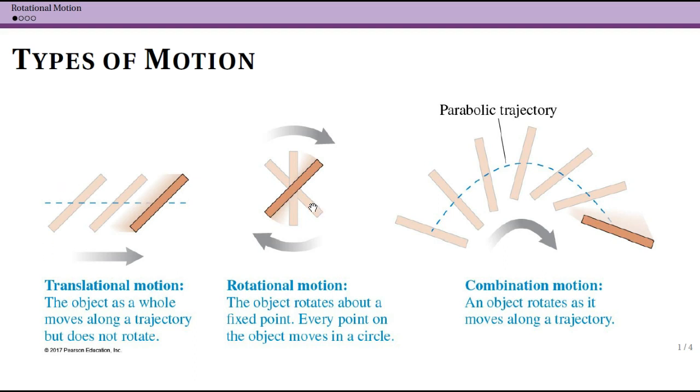Now the new type of motion is rotational motion, where the object rotates around a fixed point. In this picture, it's in the center. The idea is that now every single point on the object is moving in a circle—a slightly different circle, but everything's moving in a circle.